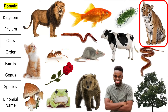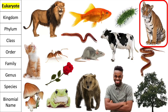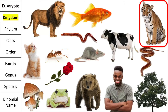So which domain does the tiger belong to? Well, it has a nucleus in all its cells so it's a eukaryote. This bacterial cell does not have a nucleus, therefore it is not a eukaryote, so we can get rid of this bacteria.